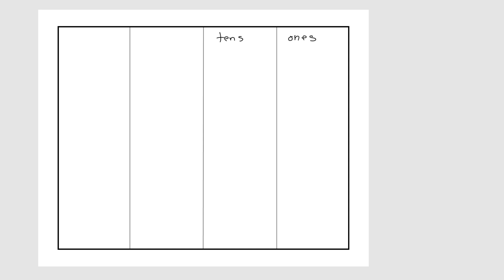Let's start with our place value chart and label our headings: ones, tens, hundreds, and thousands. And let's show three ones.